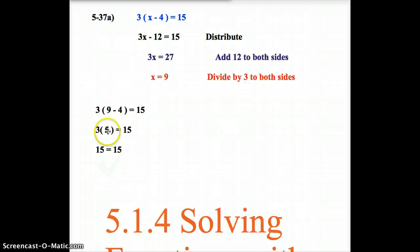9 minus 4 equals 5. I then take the 3 times the 5 to equal 15. When I get down to the spot where it says 15 equals 15, then you've done it right.